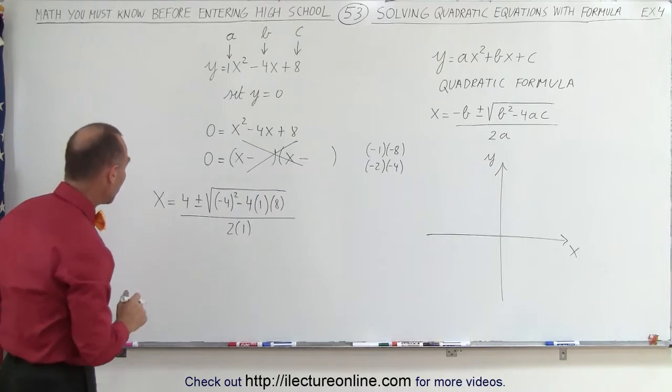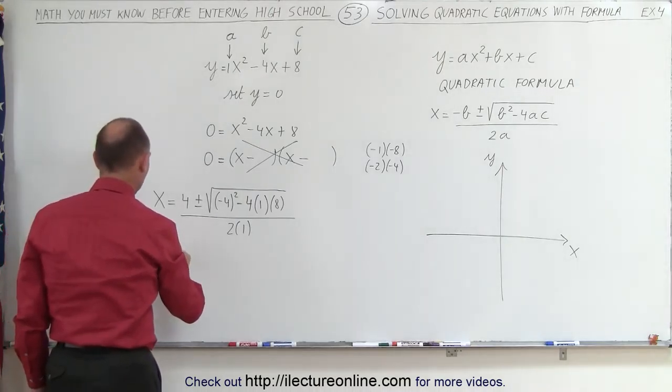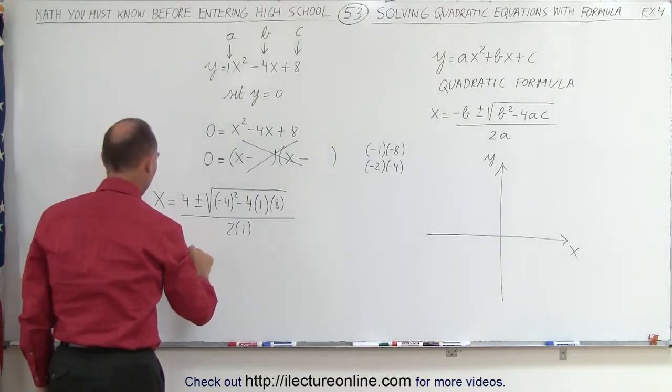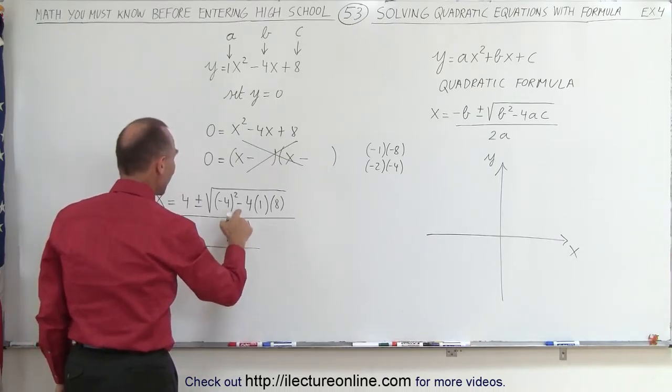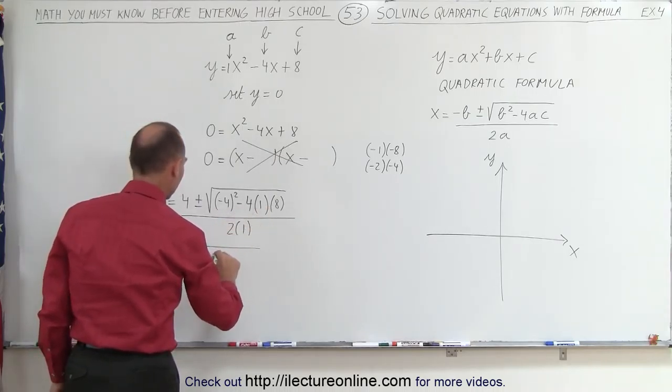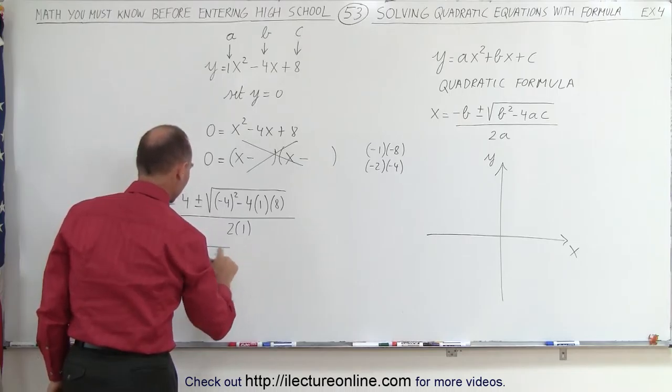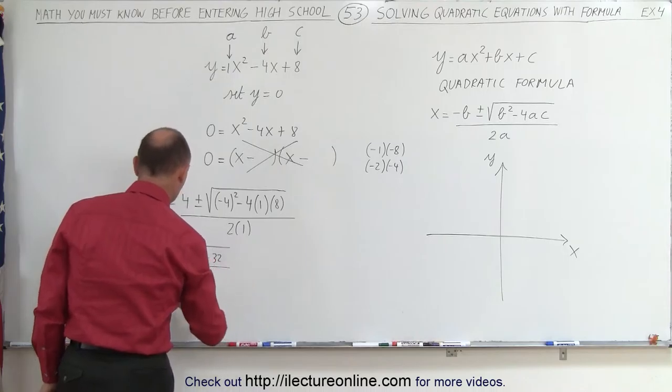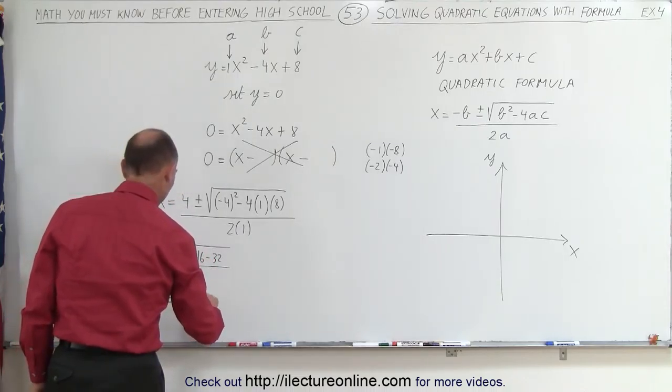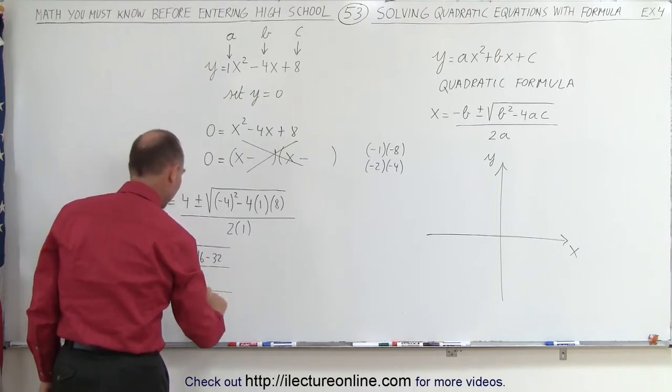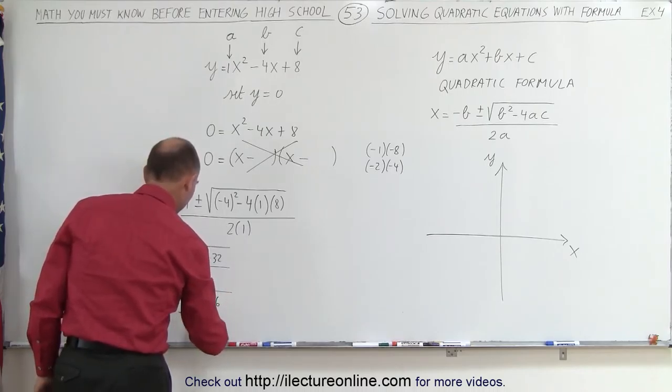So let's simplify that and see what we get. x is equal to 4 plus or minus the square root. Negative 4 squared is 16 minus 4 times 8, which is minus 32. All divided by 2 times 1, which is 2, which means that x is equal to 4 plus or minus the square root of 16 minus 32 is minus 16 divided by 2.